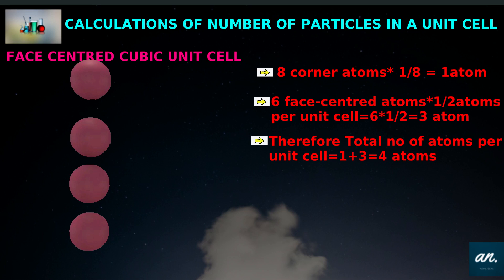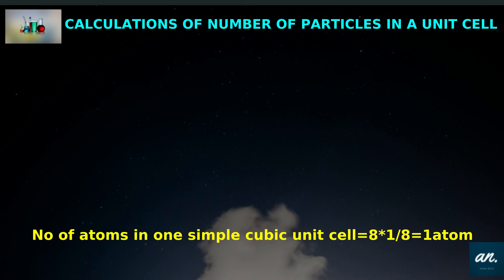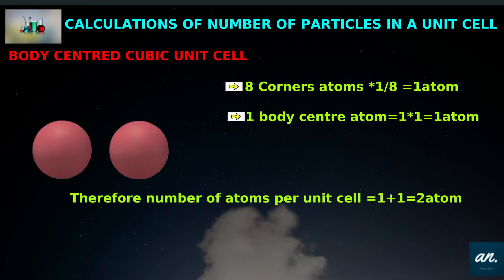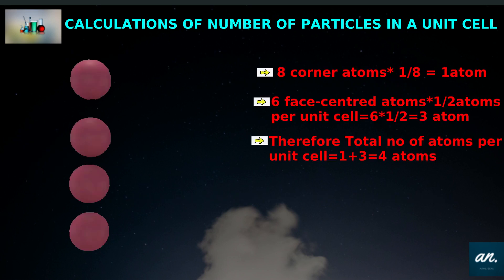In summary: simple cubic unit cell has 1 atom per unit cell; body-centered cubic unit cell has 2 atoms per unit cell; face-centered cubic unit cell has 4 atoms per unit cell.